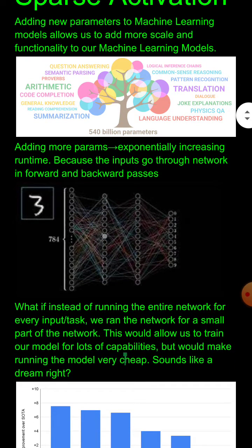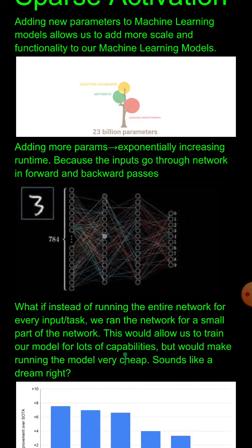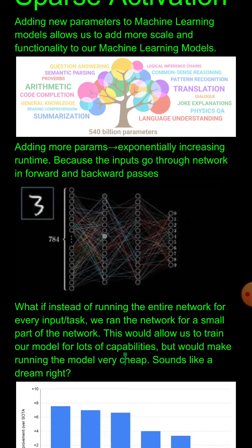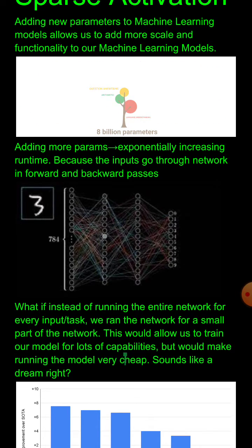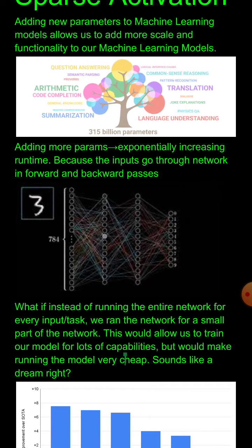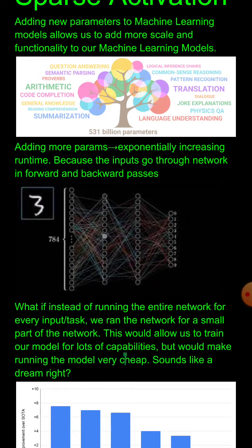But what if instead of taking the entire network and running it every time for training and testing with your input — taking all these millions of parameters — you took only a small subsection of the network and ran an input through that? You figure out: given this input, it would be very well suited for this particular portion of my network.